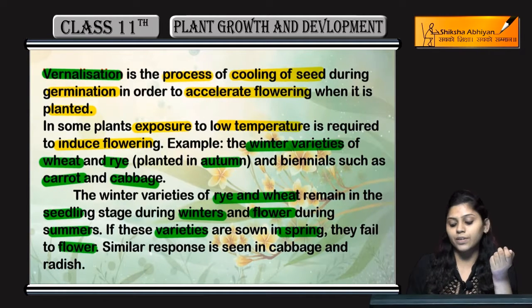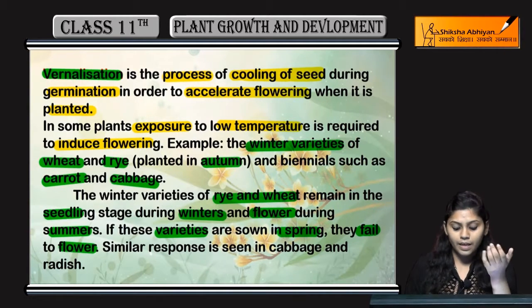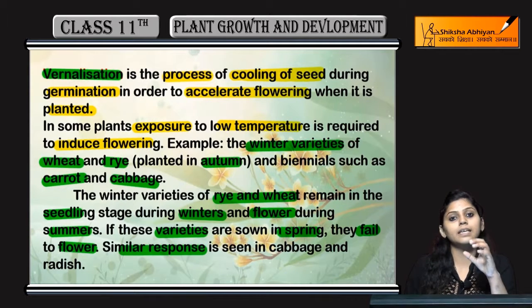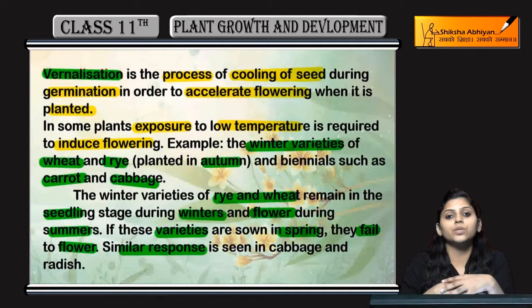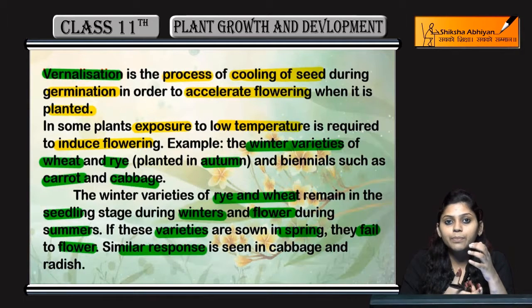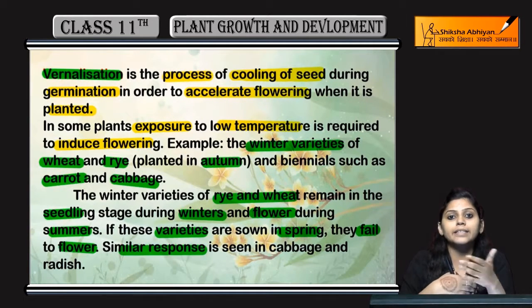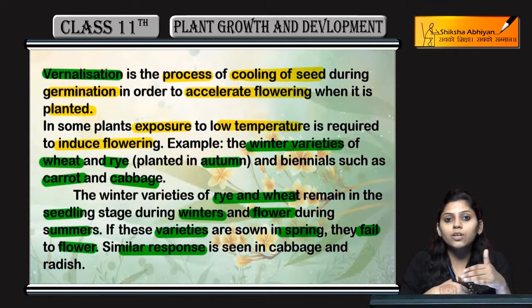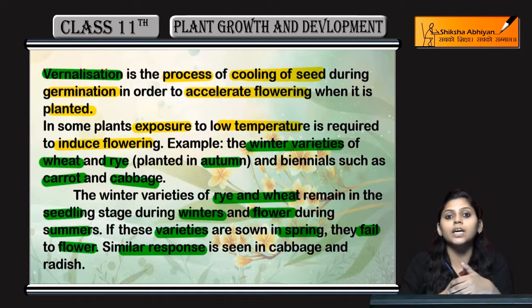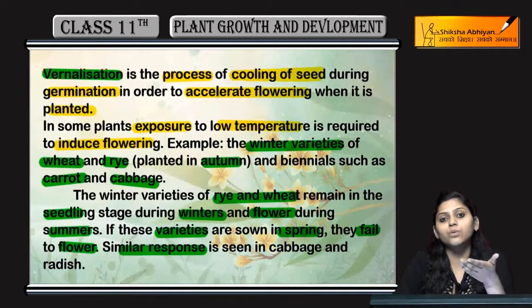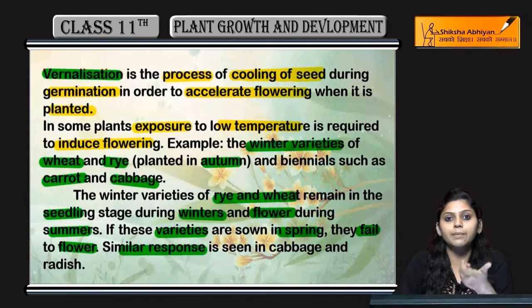This is vernalization — seeds are provided low temperature, due to which flowering is accelerated. Photoperiodism is the exposure of light to any plant, due to which it can grow or its growth can be affected, depending upon the exposure of light.